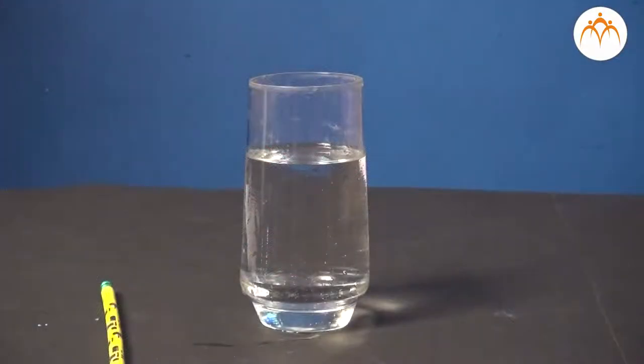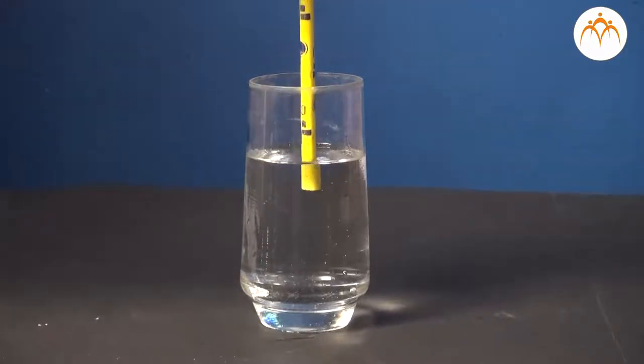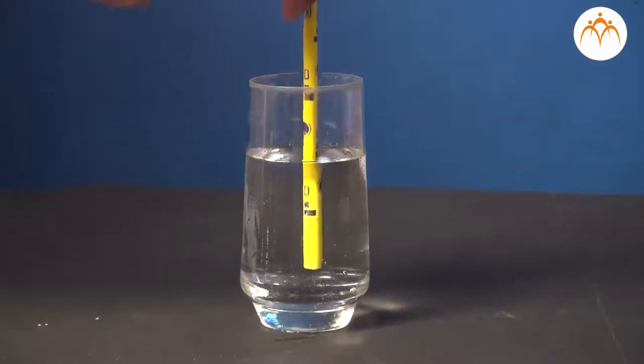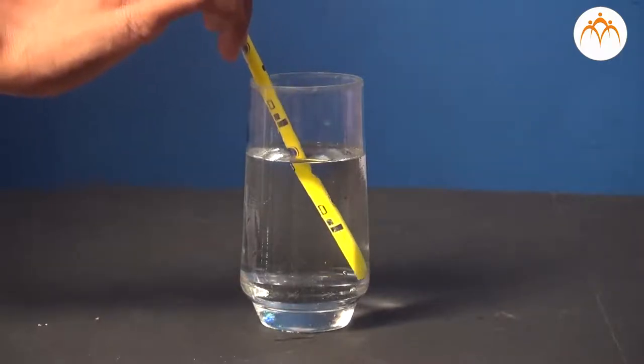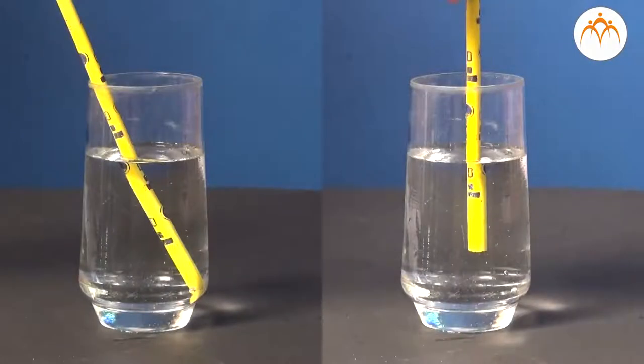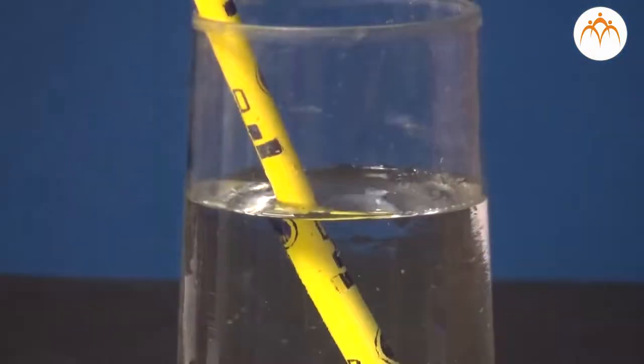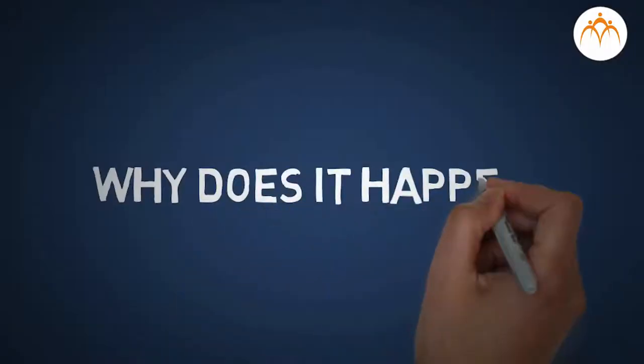Let us do activity 1 from the textbook. Take a transparent glass and fill it with water. Dip some portion of a pencil vertically in water and observe the thickness of the portion of the pencil in water. Now keep the pencil inclined to the water surface and observe its thickness. In both cases, the portion of the pencil inside water appears to be thicker than the portion above water. In the second case, the pencil appears to be broken near the surface of the water. Why does it happen?